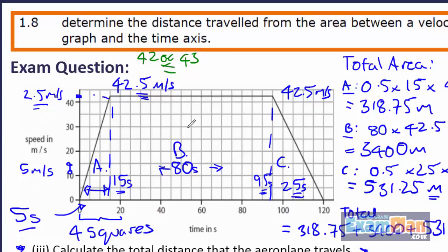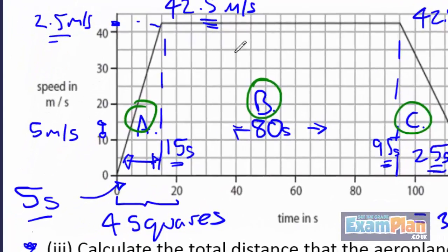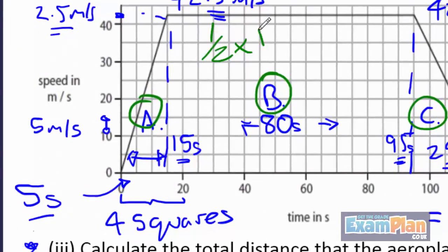In summary, remember to split the graph into different sections and work out the area of the relevant sections. Always remember that the area of a triangle is a half times base times height.